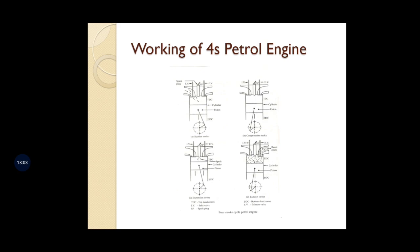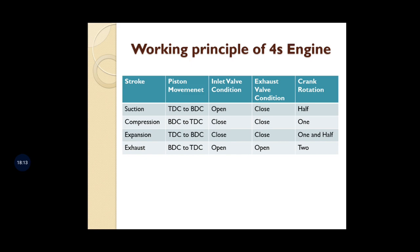A summary table shows: Suction stroke — piston TDC to BDC, inlet valve open, exhaust valve closed, crank 0–180°. Compression stroke — piston BDC to TDC, both valves closed, crank 180–360° (one revolution complete). Expansion stroke — piston TDC to BDC, both valves closed, crank at one and a half revolutions. Exhaust stroke — piston BDC to TDC, exhaust valve open, crank completes two revolutions.